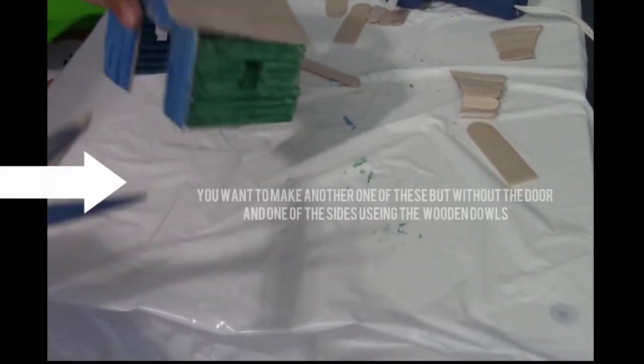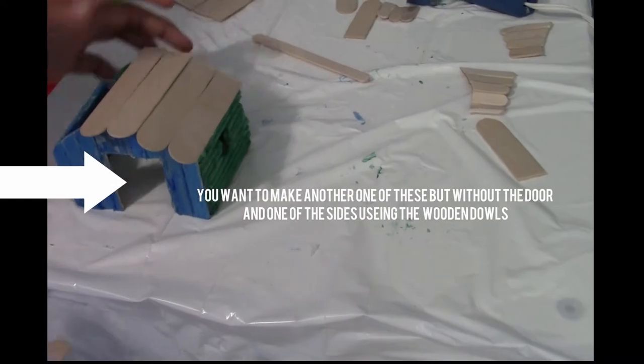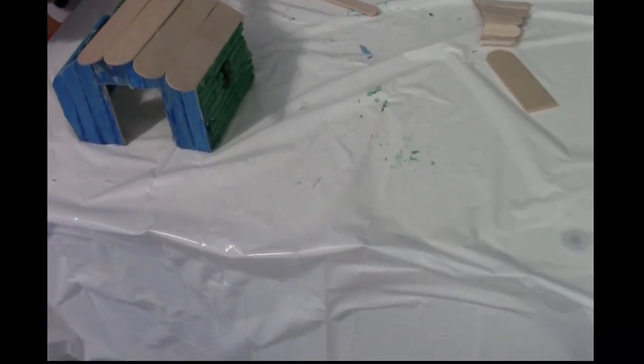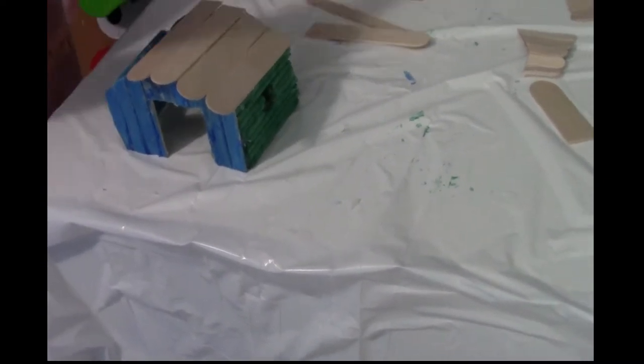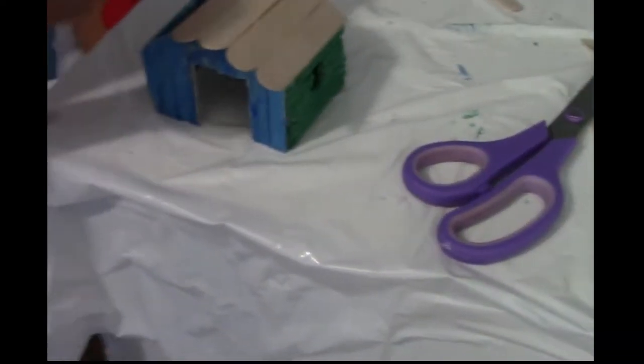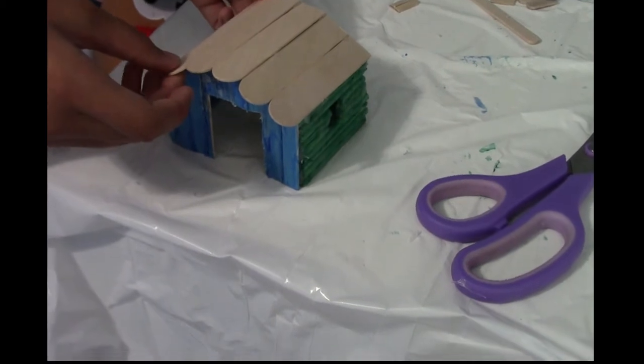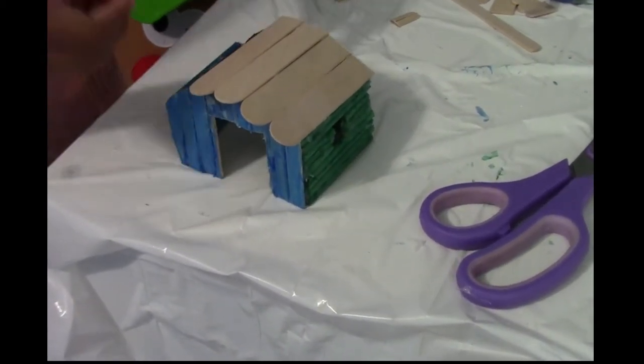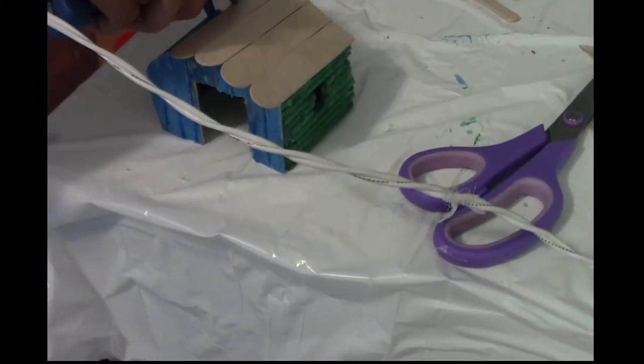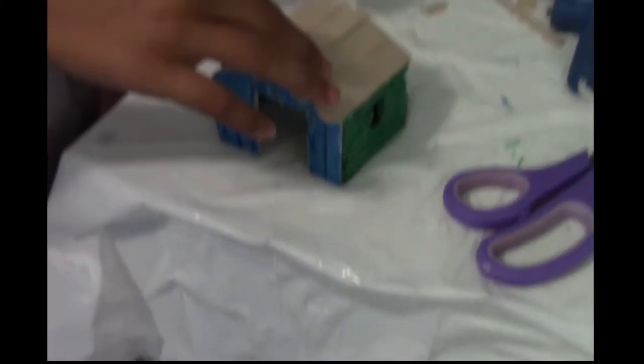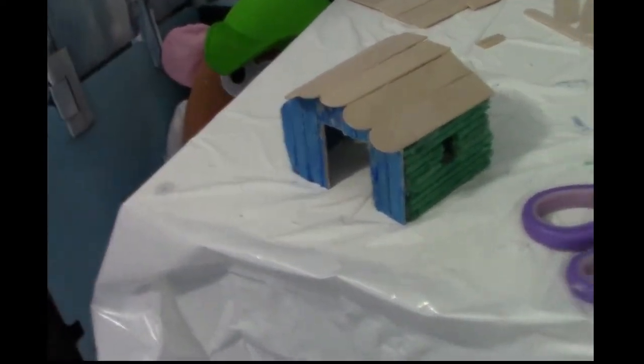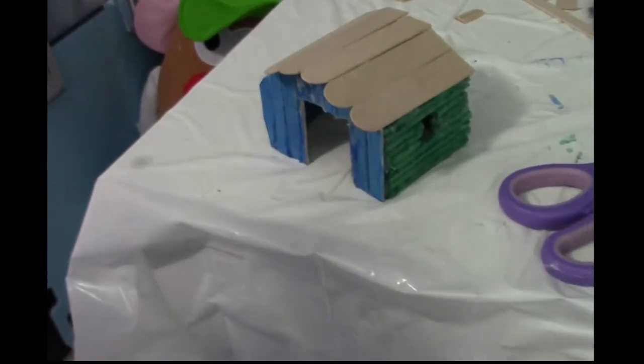You want to get some popsicle sticks, the jumbo or the mini. It honestly depends on what you like. You are going to align them like this and hot glue them on for the roof. So that is what I am doing right now. This is non-toxic hot glue, guys, so make sure you get that so you do not hurt your hamster.